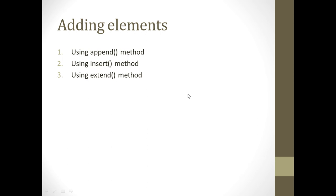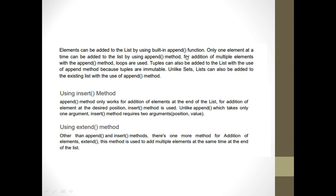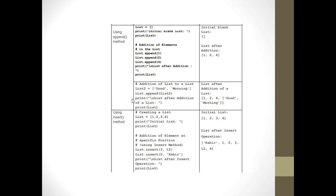Now let us consider adding elements to a list in Python. Adding elements can be done in three ways: append, insert, and extend. Append adds elements at the end. Insert works by adding elements at a desired position — for example, in between existing elements. Extend can be used to add many elements at the end of the list at the same time.